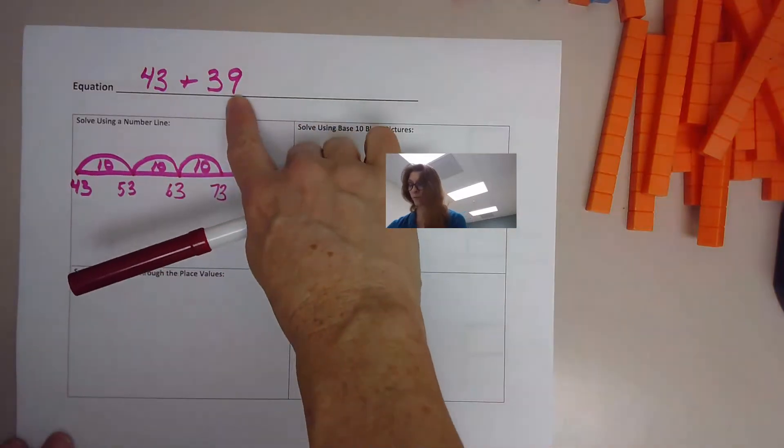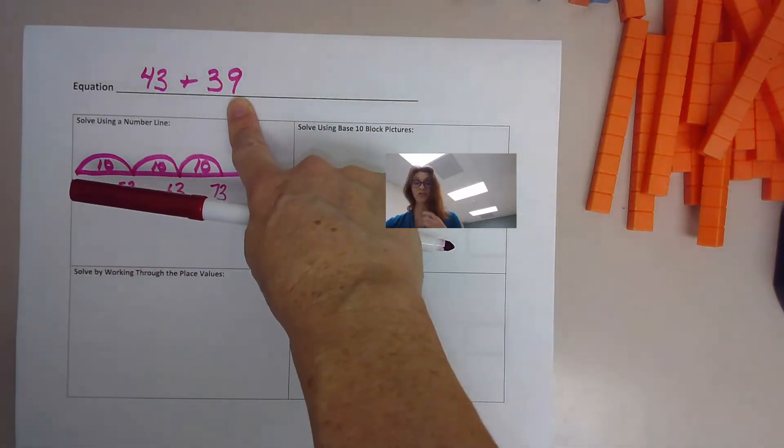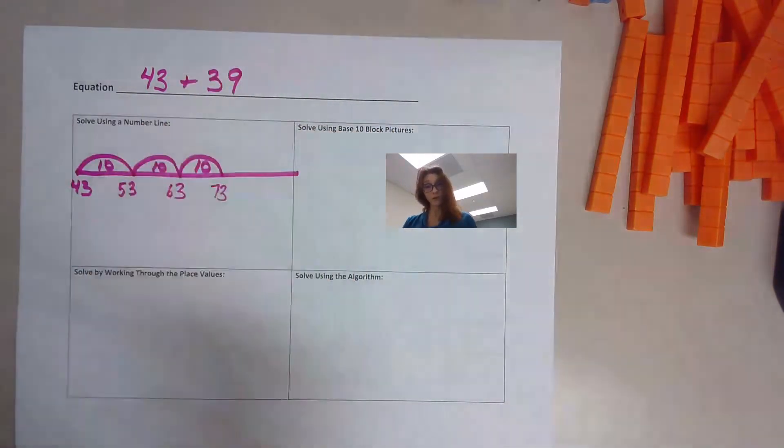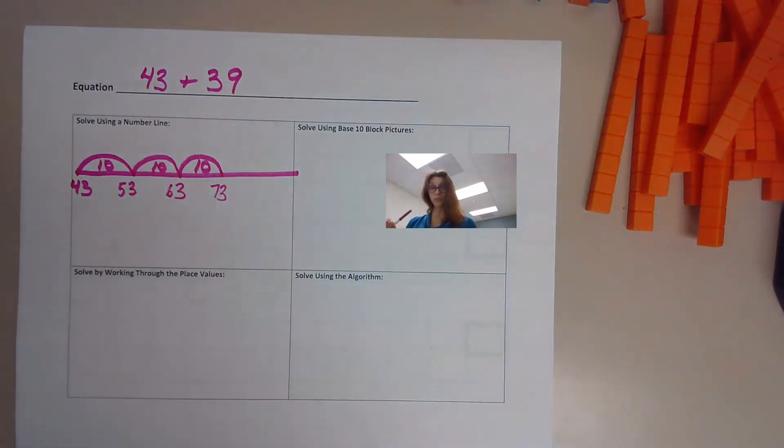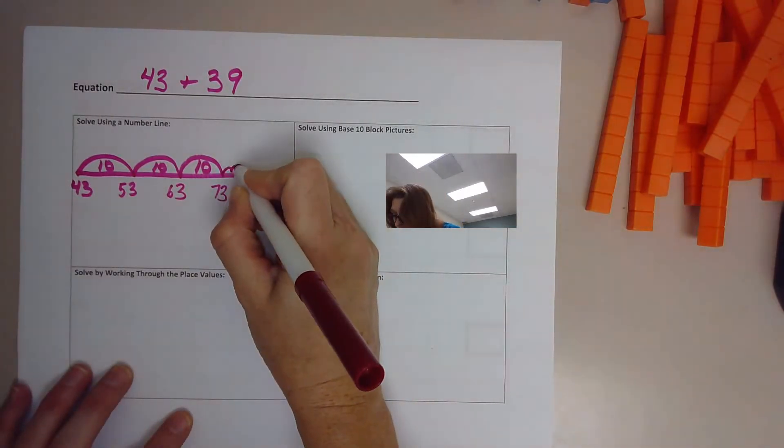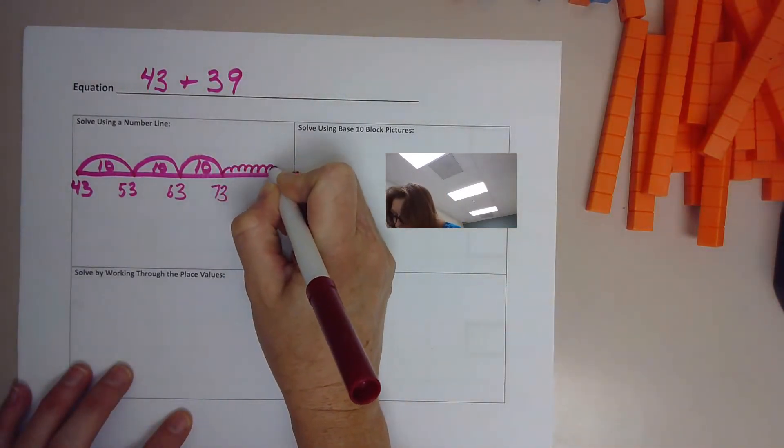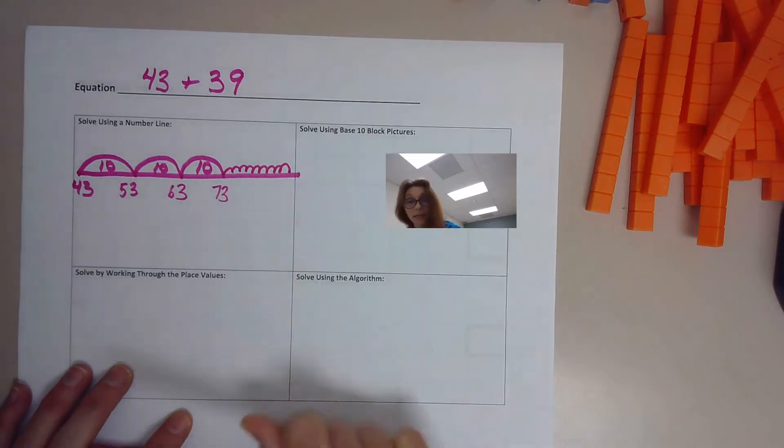Now what we have to do is add in a jump of nine. There's two ways you can do this. You can do nine little jumps of one. Okay, so you can go 1, 2, 3, 4, 5, 6, 7, 8, 9, and then count up.